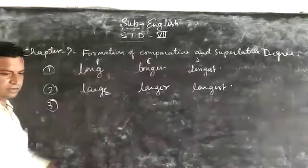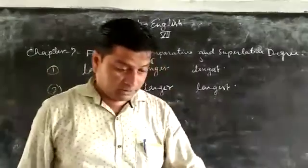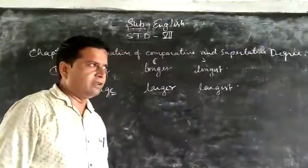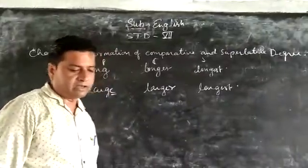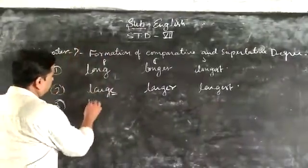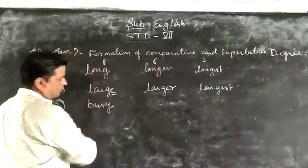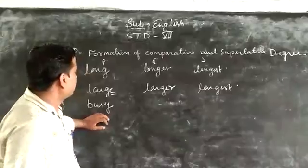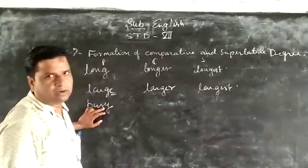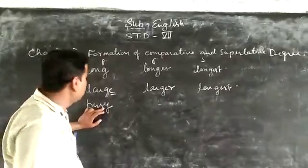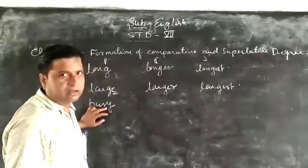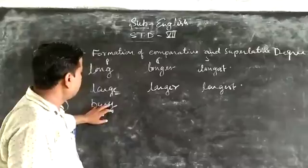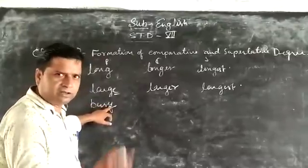The third point is: if an adjective ends in Y, we make it comparative and superlative by dropping Y and replacing Y with I, and then adding ER and EST.